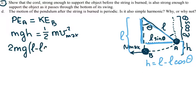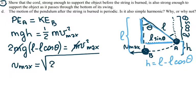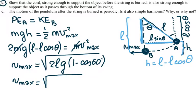Now I'm going to plug it in back here, so I have 2mg times L minus L cosine theta equals to mv squared maximum. The mass can be cancelled, so your maximum velocity is equal to the square root of 2Lg times 1 minus cosine 60. The maximum velocity is equal to the square root of 2Lg. Cosine of 60 is one half, so I have one half, so it's just the square root of Lg.